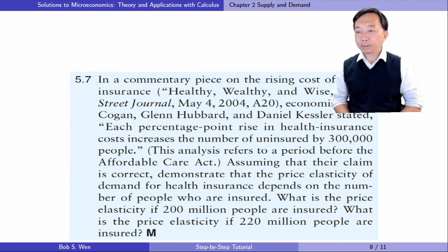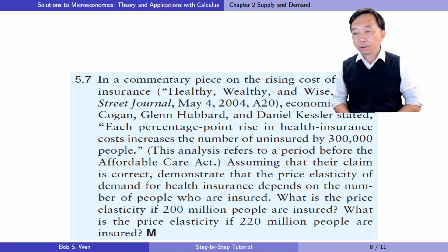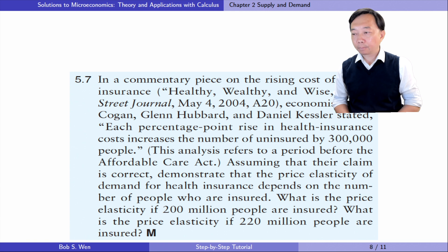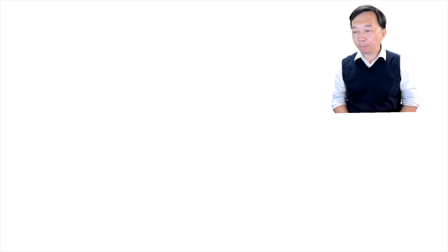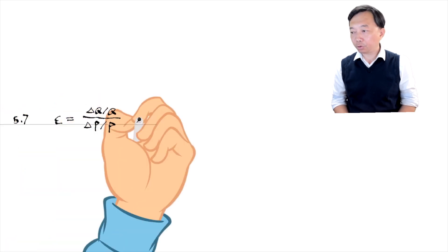Let's do exercise 5.7. Each percentage point rise in health insurance costs increases the number of uninsured by 300,000 people. Demonstrate that the price elasticity of demand for health insurance depends on the number of people who are insured. What is the price elasticity if 200 million people are insured? What is the price elasticity if 220 million people are insured? The price elasticity of demand equals the ratio of the percentage change in the quantity demanded to the percentage change in the price.